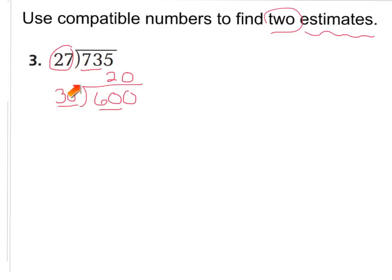So that's going to be one compatible number, but our question says find two. So let's keep listing our multiples of 30: 30, 60, 90. Now, I know 735 falls between 600 and 900. So these will be my compatible numbers to estimate. 600 divided by 30, 900 divided by 30. So 900 divided by 30 will be 30 because 30 times 30 is 900.